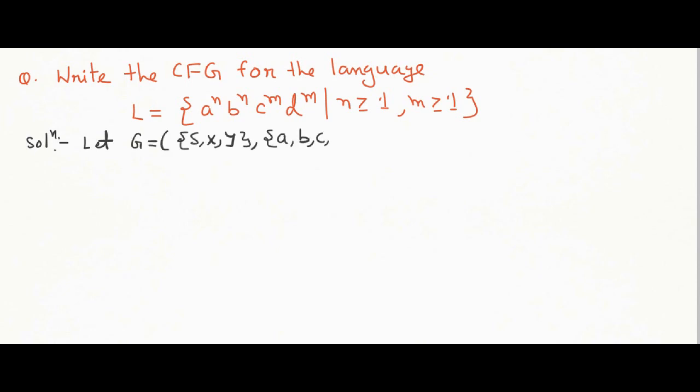A to the n, B to the n, C to the m, D to the m. N is greater than equal to 1, M is greater than equal to 1. So we are going to use three variables. Productions are as such.